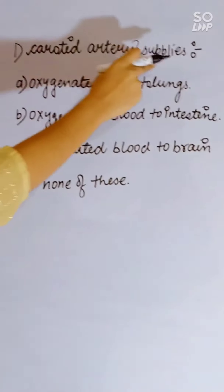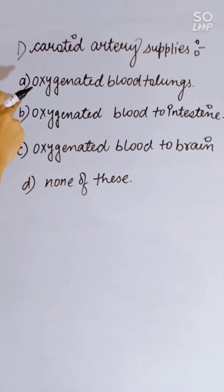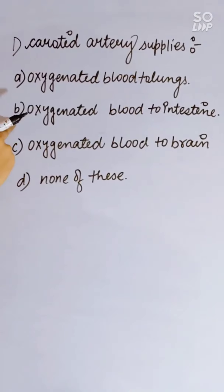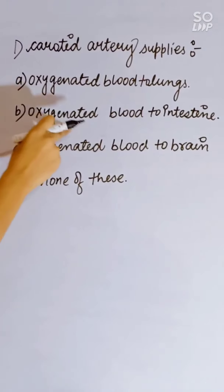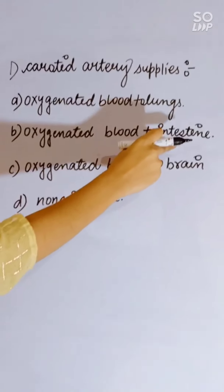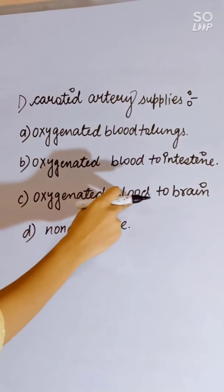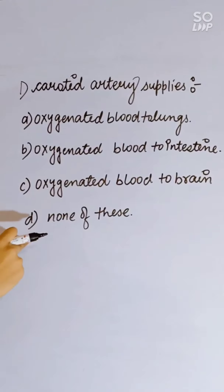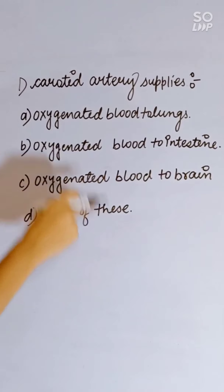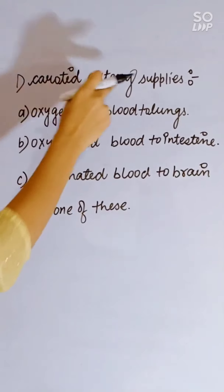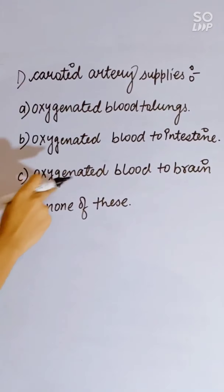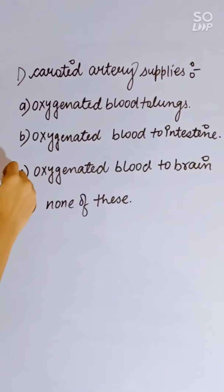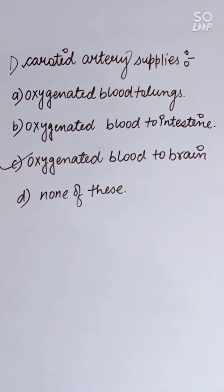The carotid artery supplies: oxygenated blood to lungs, oxygenated blood to intestine, oxygenated blood to brain, or none of these. The carotid artery supplies oxygenated blood to the brain. Correct answer is C.